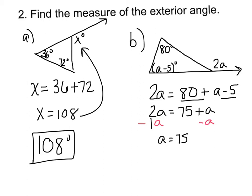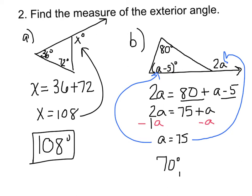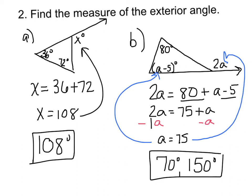I take the value of a and plug it in to find the angle measures. One angle measure is 80 — we already know that one. This angle measure is 75 minus 5, so that would be 70 degrees. And then this angle is 2 times 75, which equals 150. So 150 degrees and 70 degrees is my answer.